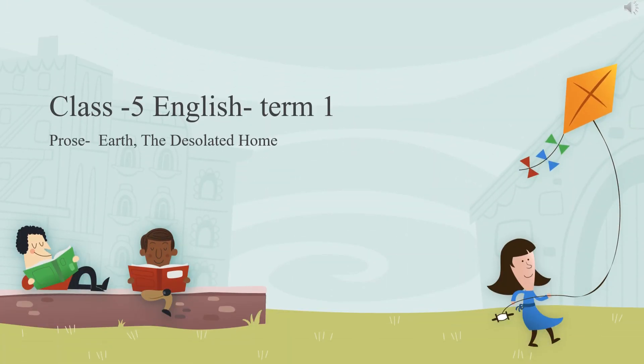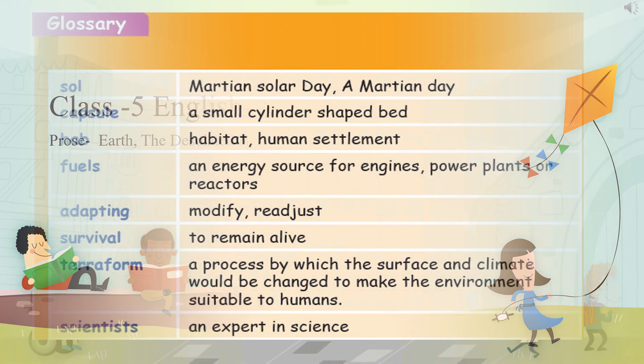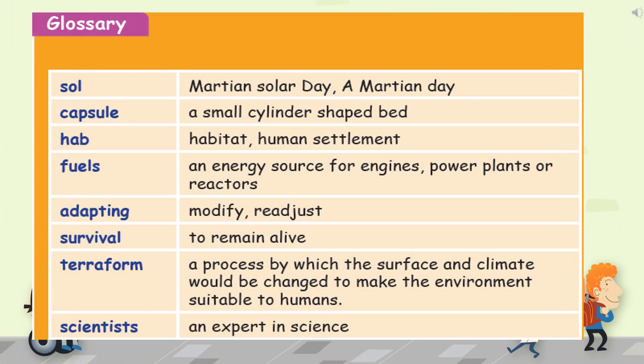Hello class 5. Today we are going to start with our English prose term 1. The lesson name is Earth, the desolated home. Before starting the lesson, let's see the glossary.